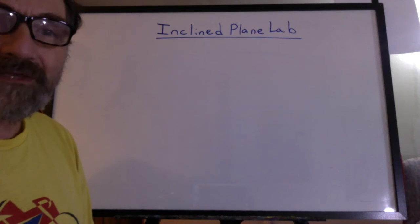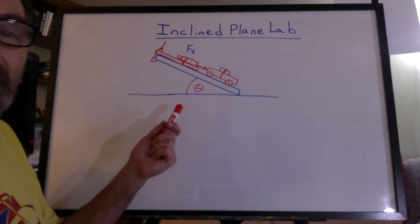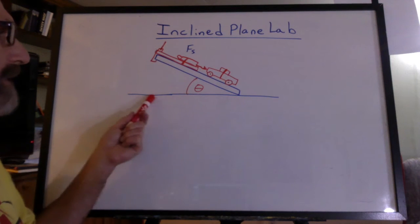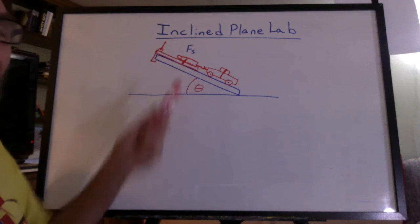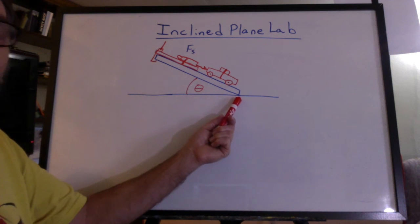And so this is the incline plane lab. So here's a diagram of the apparatus. You need to measure the angle from the horizontal up to the board. Don't measure to the top of the ramp. Measure to the bottom of the ramp because that's where the pivot point is at the bottom.